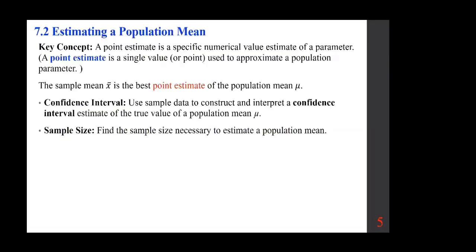We are dealing with estimating parameters and determining sample sizes. A point estimate is a specific numerical value estimate — it is a single value used to approximate a population parameter. In the case of mu, we use x-bar. The sample mean x-bar is the best point estimate of the population mean mu.